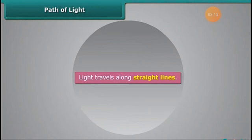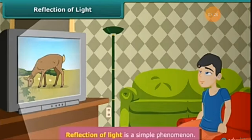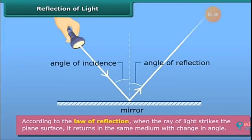Our next topic in this session is reflection of light. Can you tell how do we see objects? We see objects when light is reflected from them and reaches our eyes. Reflection of light is a simple phenomenon. According to the law of reflection, when a ray of light strikes a plane surface, it returns in the same medium with a change in angle.